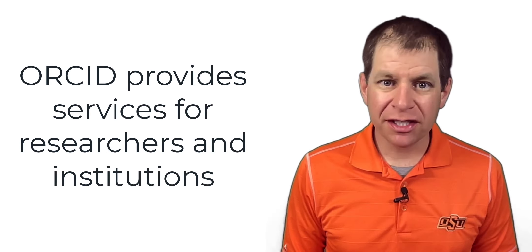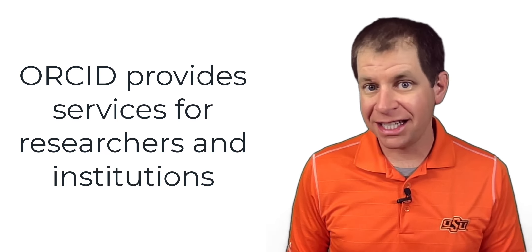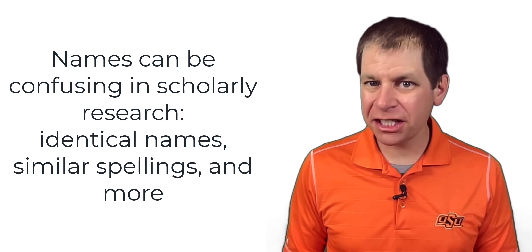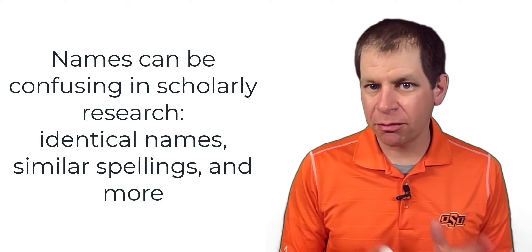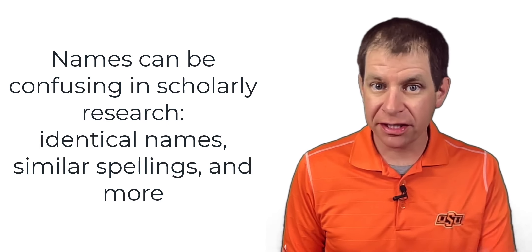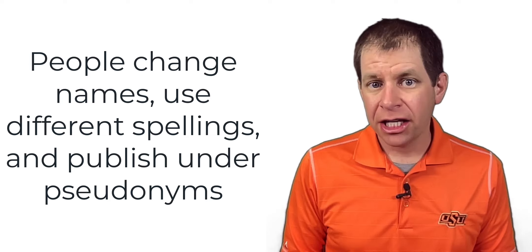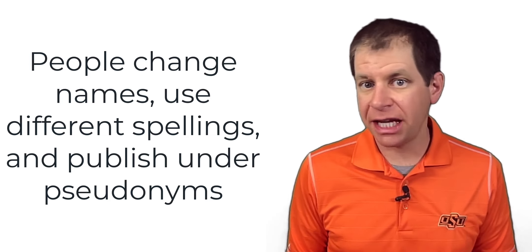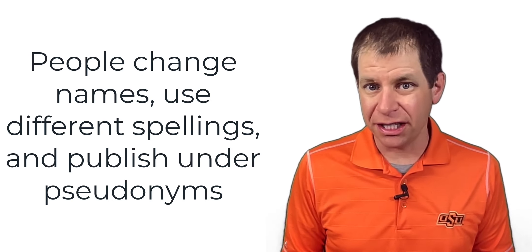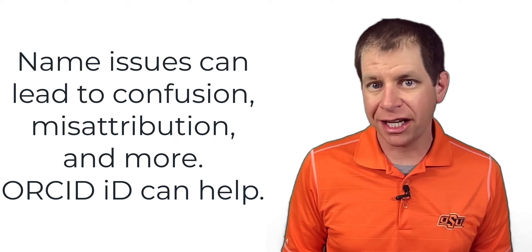They provide services for researchers and institutions, and one of the most useful is what's known as an ORCID ID, and it all starts with your name. Names can get really confusing, especially in scholarly research. It's not uncommon for two or more researchers to have the same name, and there can also be confusion related to similar names with slightly different spellings. People can change names with life circumstances, use different spellings, and publish under names that are different from their actual name. All of these can sometimes lead to confusion, misattribution, and other errors when trying to keep track of and manage scholarly and creative works.